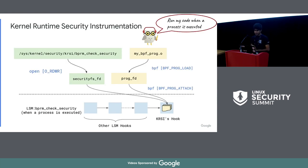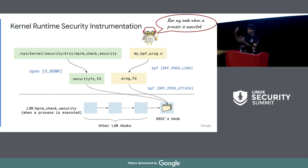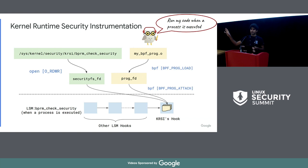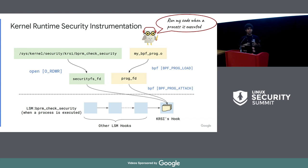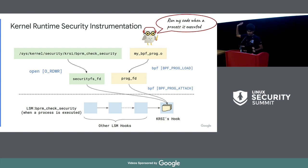Here's what it looks like. Each LSM hook is represented by a file in securityFS — a fancy name for /sys/kernel/security. You have your BPF program, which is an object file you compile — the bytecode. You're essentially saying to the LSM: please run this piece of logic when a process is executed as part of the LSM hook. You open the file, you have a program FD using a BPF syscall, and you attach these two together. You can attach multiple programs to each LSM hook, and it works alongside other LSMs. So you can have SELinux, AppArmor, and then KRSI would run all the BPF programs there.